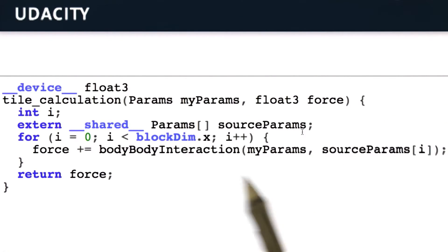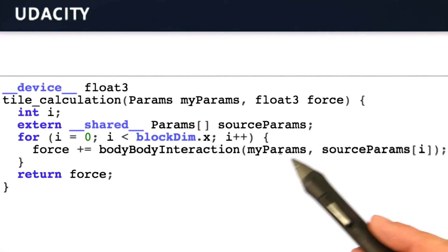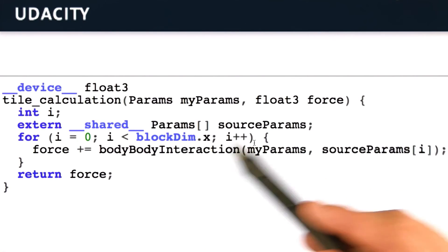We compute the interaction, which might be gravitational or electrostatic force. The params will differ depending on what kind of force it is. We compute the interaction and add the resulting force to the force accumulator variable and return it.